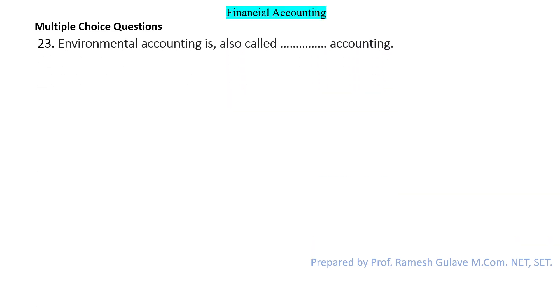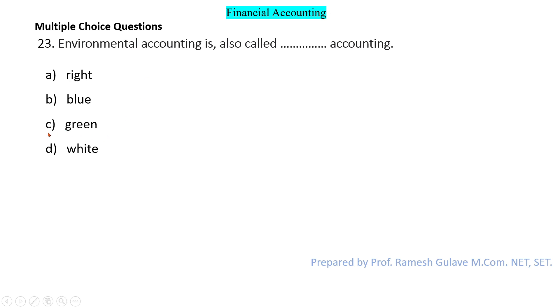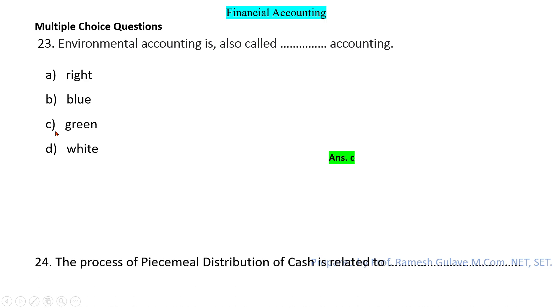The next question says: environmental accounting is also called dash. Environmental accounting is also called green accounting. So here option C is the right answer.